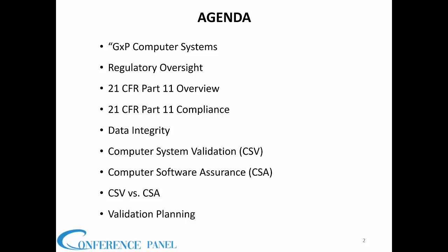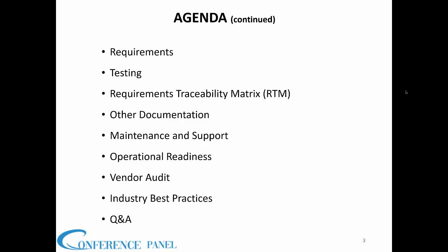We will also cover data integrity because 21 CFR Part 11 and data integrity guidance from FDA have significant overlap areas. We will talk about computer system validation, the newer computer software assurance (CSA), and the differences and benefits of validation planning, requirements testing, requirements traceability matrix, and Part 11 compliance requirements. We will also cover vendor audit, industry best practices, and end with Q&A.